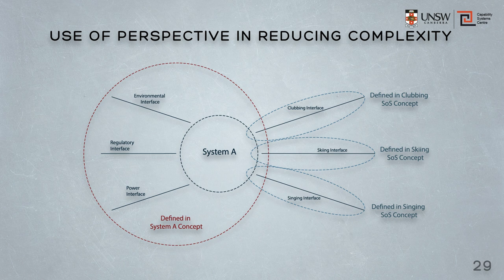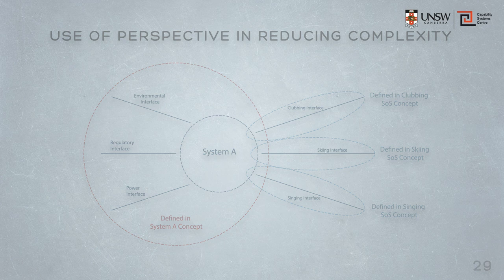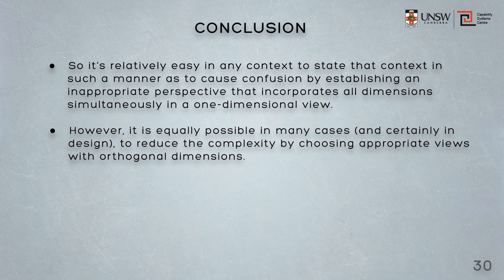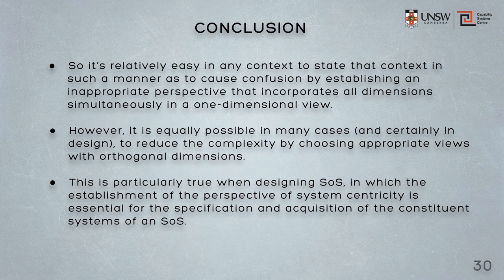Systems then, whilst they are designed to be system-centric, must be designed in the context of a system context and also the system of systems context to which that system is required to join. So this is a simple example to show that it's relatively easy in any context to state that context in a manner which can cause confusion by choosing an inappropriate perspective. That inappropriateness normally comes by having operational scenarios that incorporate all dimensions simultaneously in a single-dimensional view. However, it's equally possible in design to reduce the complexity by choosing appropriate views with orthogonal dimensions, which means we must be very careful when we write the operational scenarios to choose those operational scenarios such that they are system-centric.